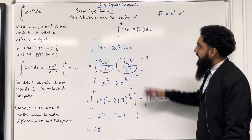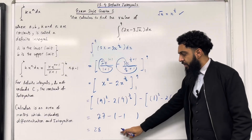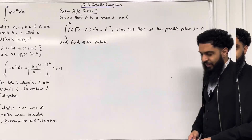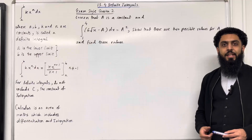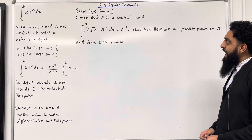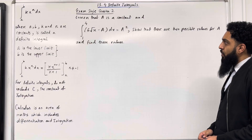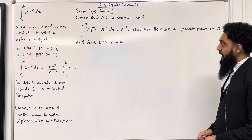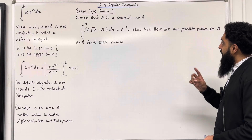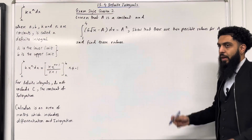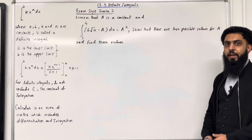This gives me 28. So the value of this integral is 28. This completes exam style question 1. Moving on to exam style question 2: given that a is a constant and the integral from 1 to 4 of 6 square root x minus a dx is equal to a squared, show that there are two possible values for a and find these values. Let's proceed with the solution.